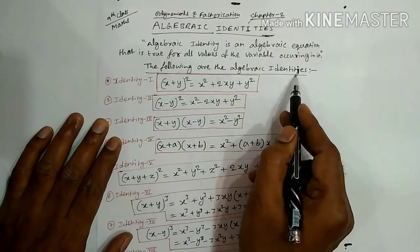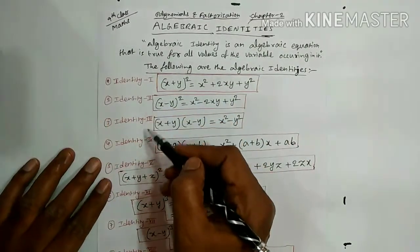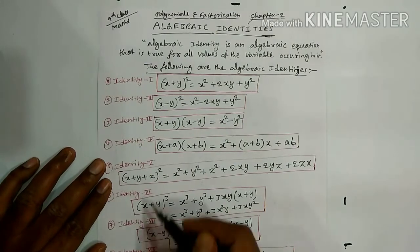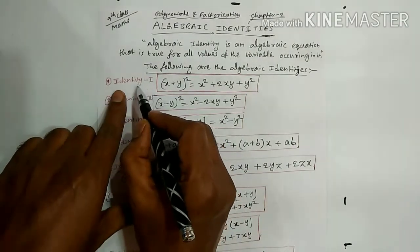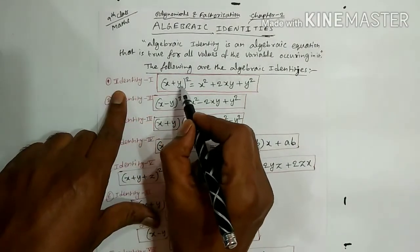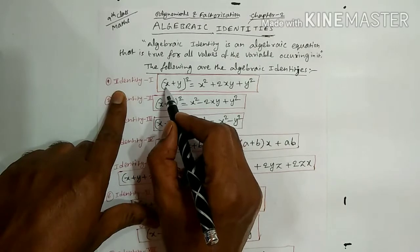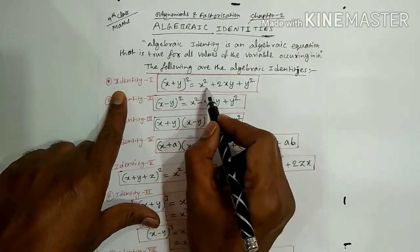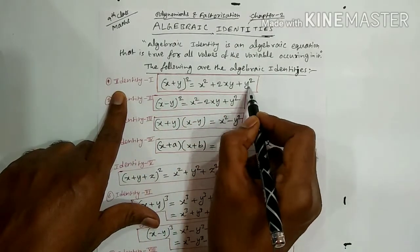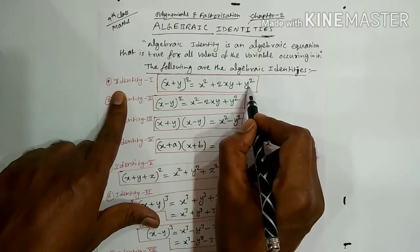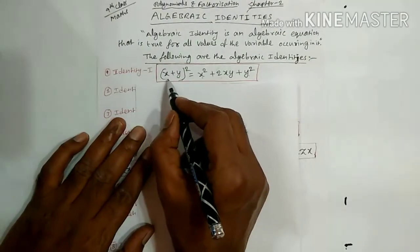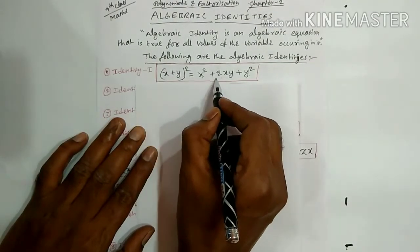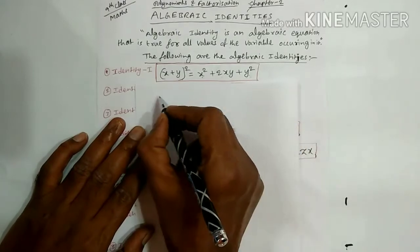The following are the Algebraic Identities — we have 8 identities. The first one, everybody knows: X plus Y whole square. This is the first identity: X plus Y whole square is equal to X square plus 2XY plus Y square.